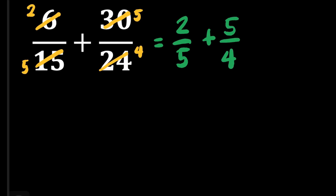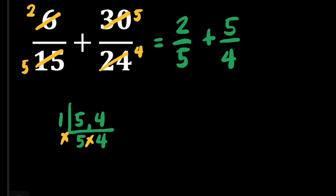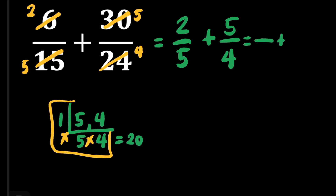Next step is we have to get the LCD of 5 and 4. What number can we divide 5 and 4? There's nothing except for 1. So, 5 divided by 1 is equal to 5, and 4 divided by 1 is equal to 4. The LCD will be the product of the numbers inside the box, which means our LCD is 20.